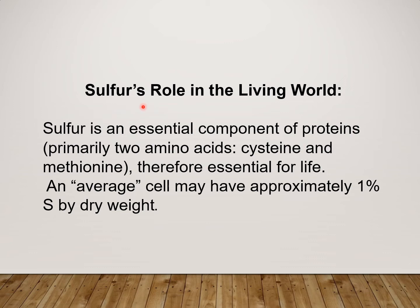Where do we find this Sulphur? Sulphur is an essential component of proteins. Proteins are made of amino acids — they are nothing but a chain of amino acids. There are two amino acids, namely Cysteine and Methionine, which contain Sulphur. As these amino acids are important from a protein synthesis point of view, Sulphur is essential for life. An average cell may have approximately 1% of Sulphur by dry weight.